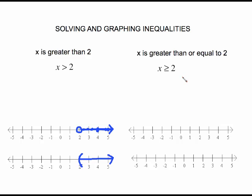There's a minor difference with x greater than or equal to 2. In this case, the 2 is part of the solution set. So instead of an open circle, we have a solid circle on 2 and we shade to the right. That means any number in that region will make this inequality statement true. For the parenthesis idea, we use a square bracket on the number — the square bracket indicates that 2 is part of the solution set.